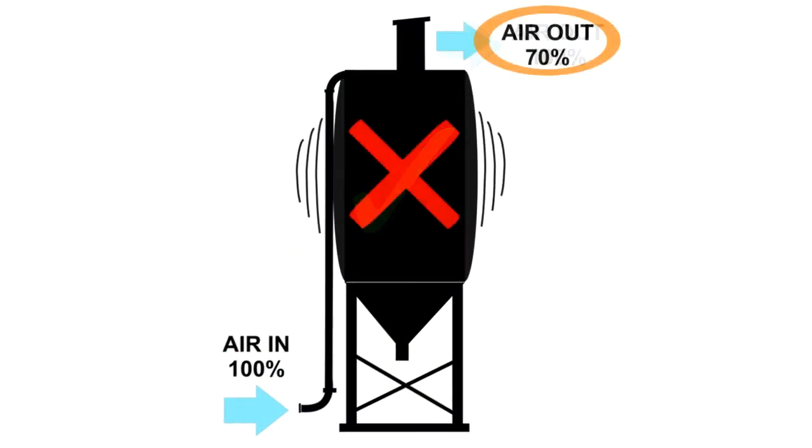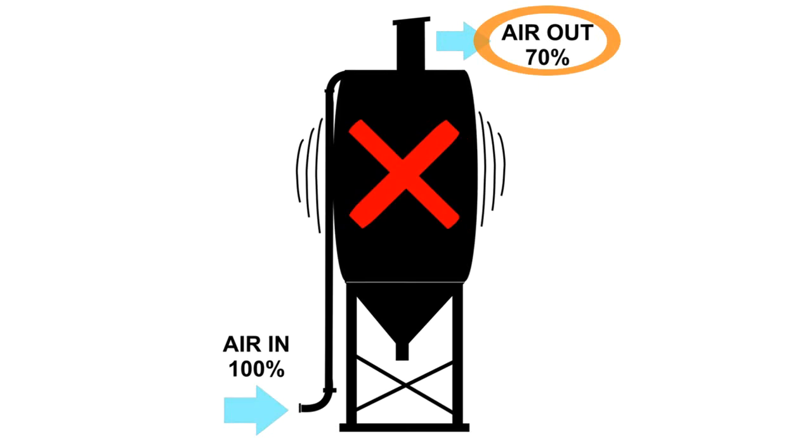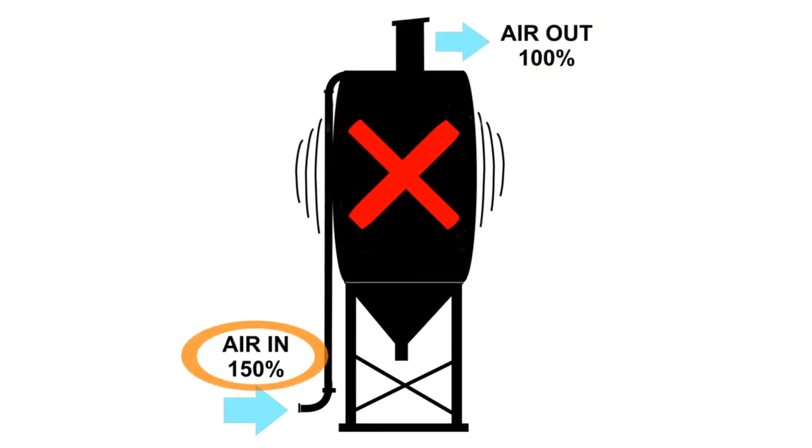However, if the air flow out is restricted, for example by a filter blockage, or if there is too much air coming into the vessel to be safely vented, which is likely a result of uncontrolled tanker discharge, then the silo is at risk of over pressurisation. This happens far too often.